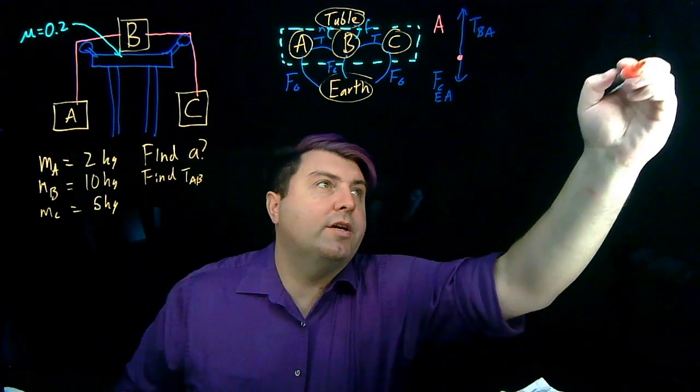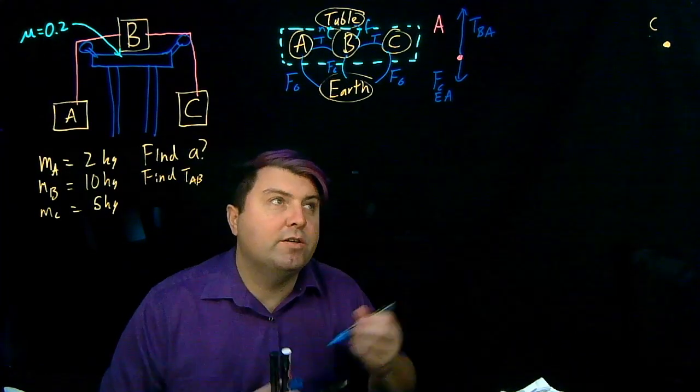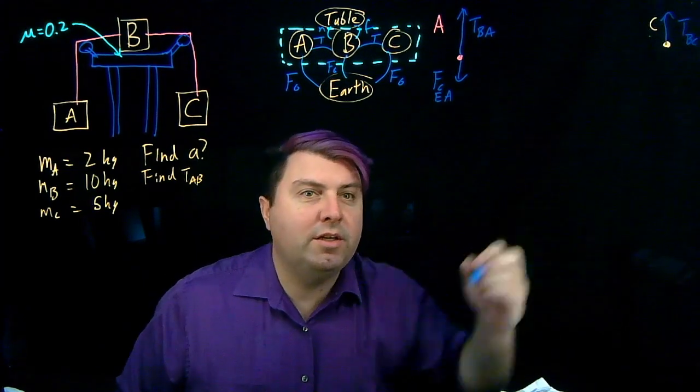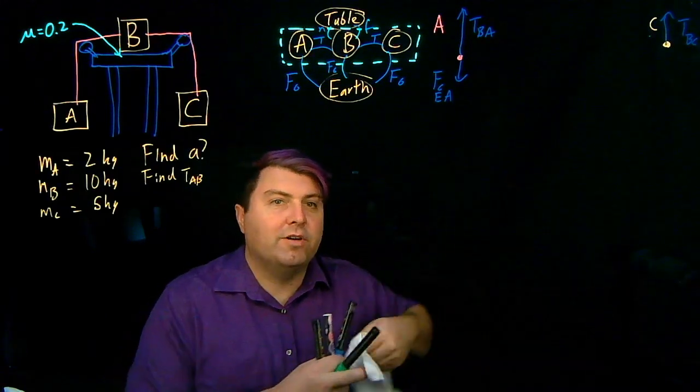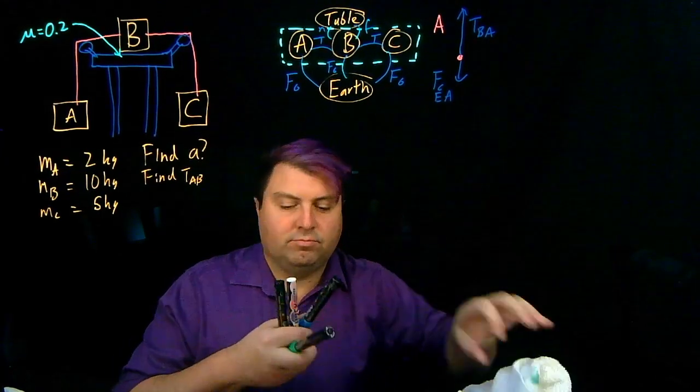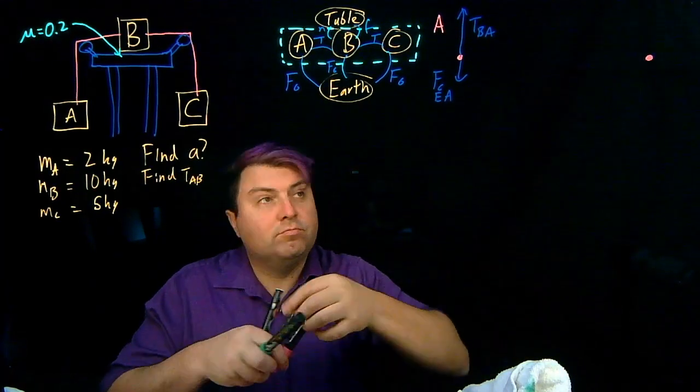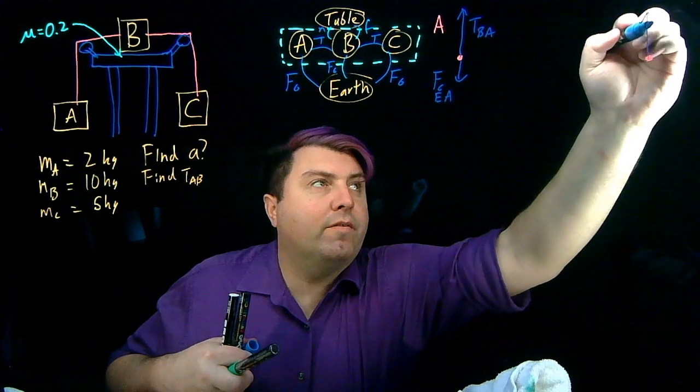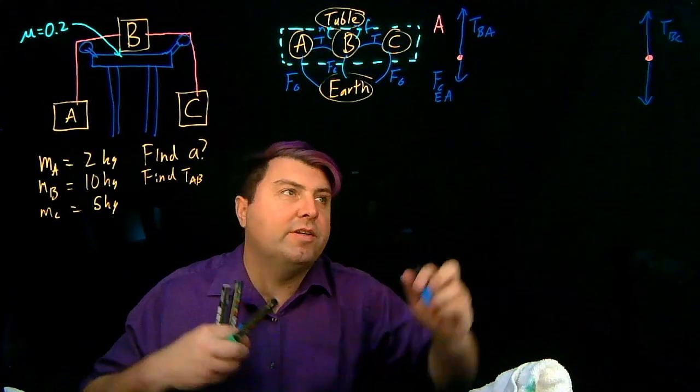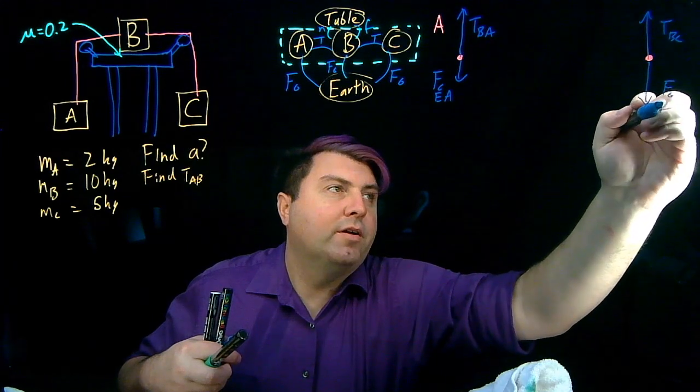For tension, for object C, we have the tension pulling up. And that's the tension from B on C. Let's redraw this so that we can actually see this whole thing. So we have TBC. And then we have a larger force of gravity going down because the mass C weighs more. And so that's the force of gravity from Earth on C.